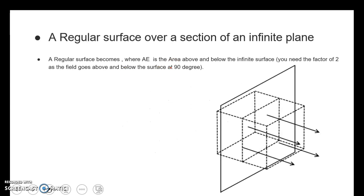And a regular surface becomes 2AE, where A is the area above and below the infinite surface. You need the factor of 2 as the field goes above and below the surface at 90 degrees.